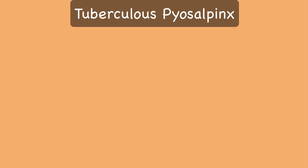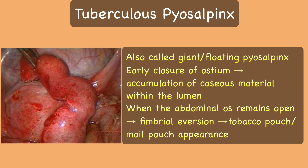Tuberculosis pyosalpinx is also called giant or floating pyosalpinx. The pathogenesis is as follows: if there is early closure of the ostium, there will be accumulation of caseous material within the lumen. However, in some cases the ostium remains open and there is pre-fimbrial constriction followed by fimbrial eversion, and this is known as the characteristic tobacco pouch or male pouch appearance.